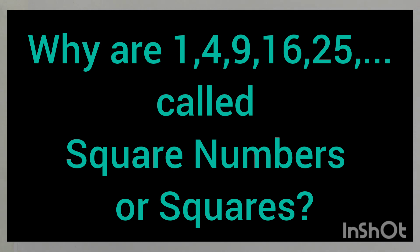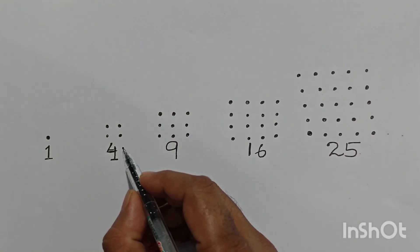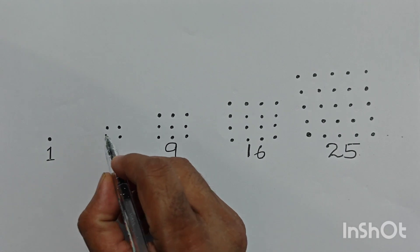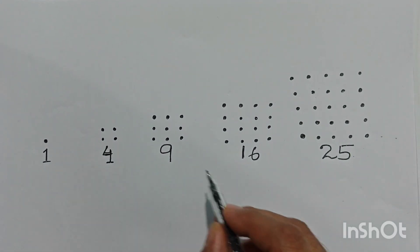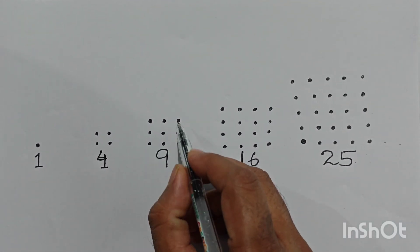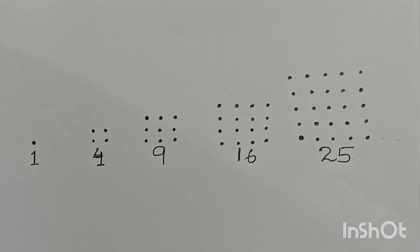Part two: why are 1, 4, 9, 16, 25 called square numbers? Answer: they are called square numbers because they can be arranged perfectly in a square. Each side has an equal number of dots. For example, 4 has 2 dots on each side, and 9 has 3 dots on each side, all forming perfect squares.